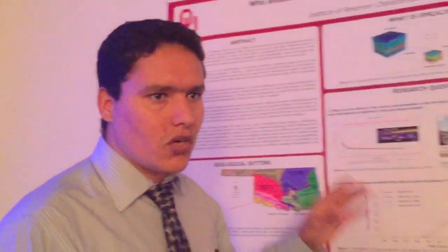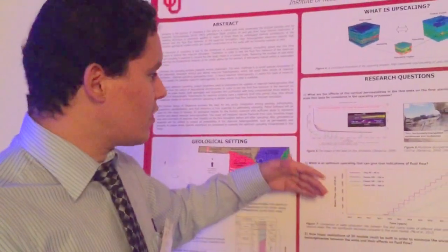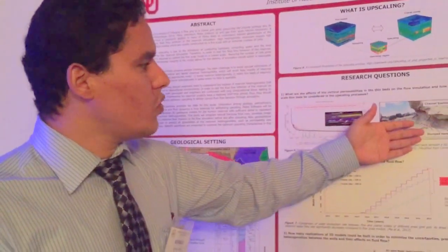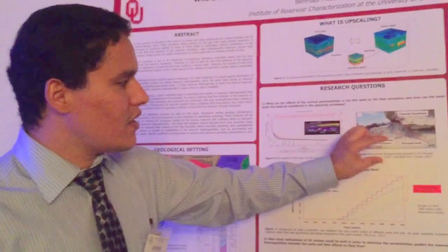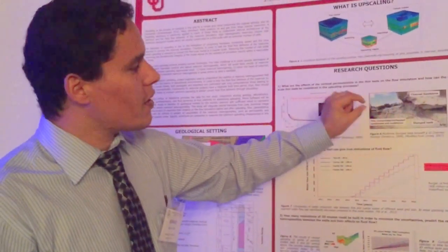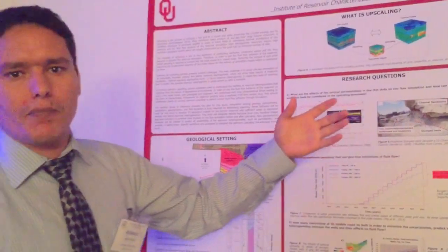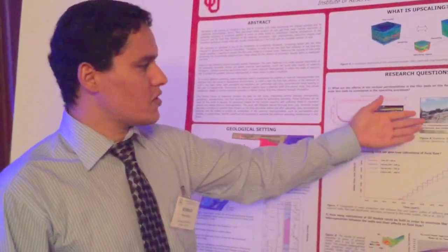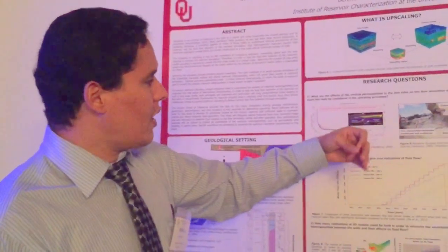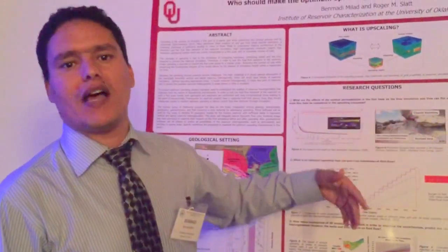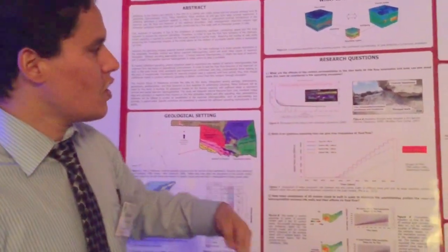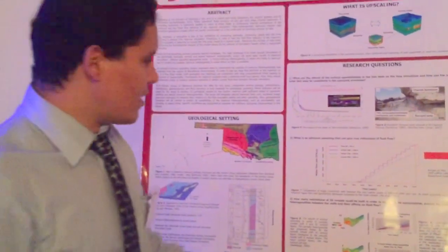So which one do you believe, the fine scale model or the coarse scale model? So this is one of the question that I'm working on it and also how would you be able to eliminate the small beds, thin beds where you have different petrophysical properties for those thin beds. And then you upscale them and you estimate their properties with other adjacent beds. You will have different performance here as well.